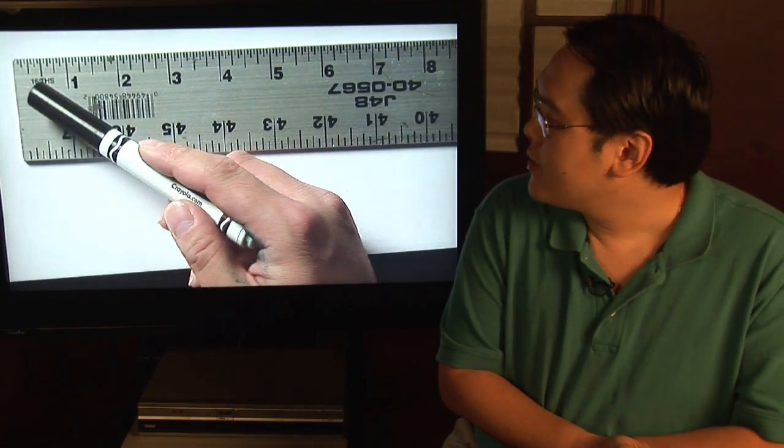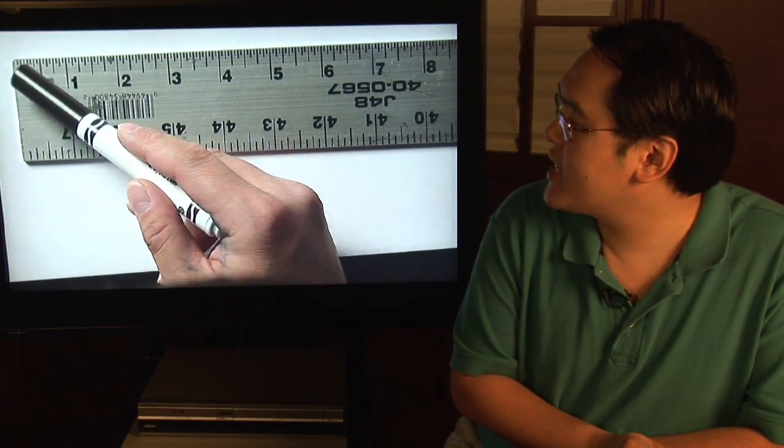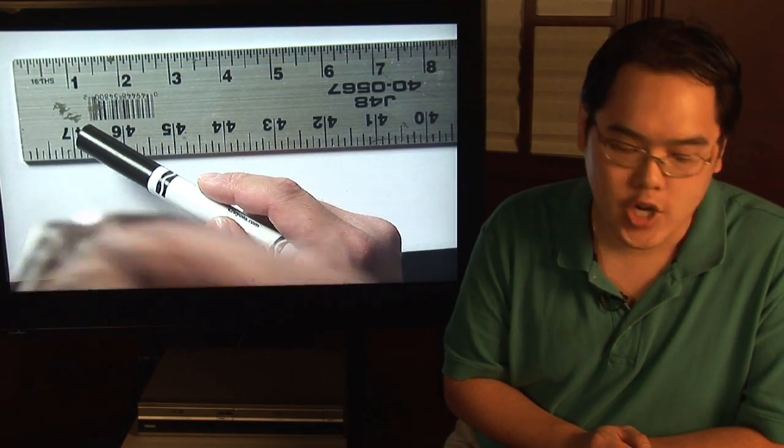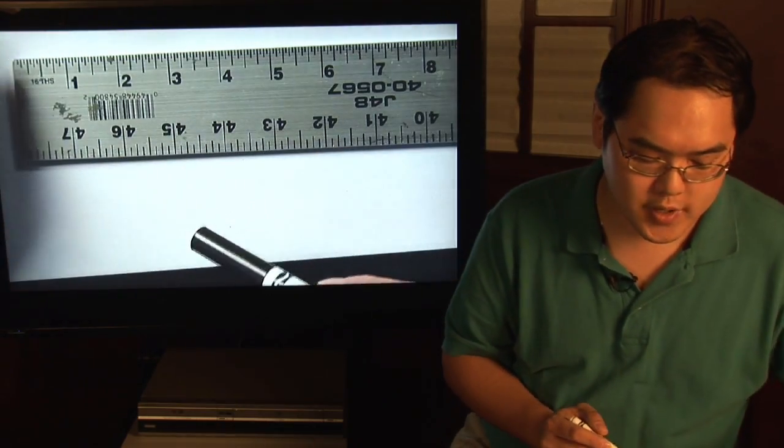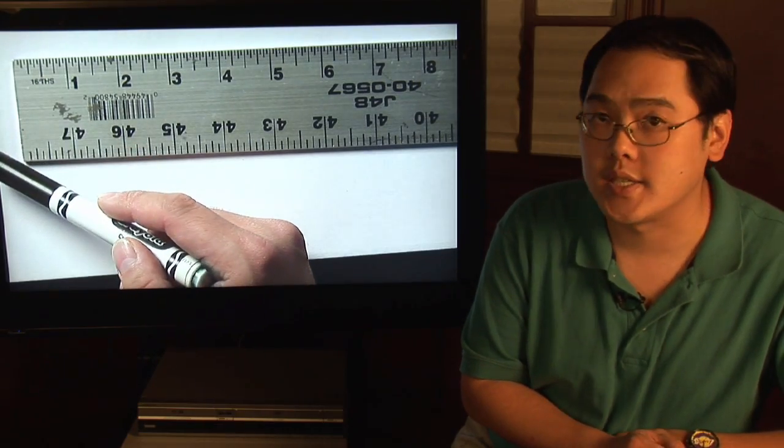Now, because everything is in sixteenth notches, there's going to be sixteen ticks for every inch. So starting from the first one over here, you have the first tick which stands for one sixteenth.